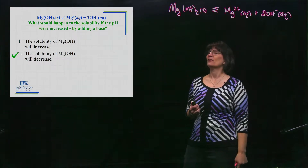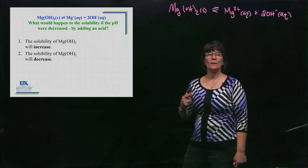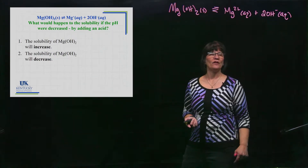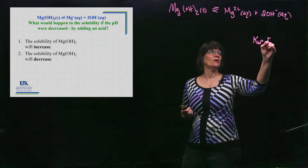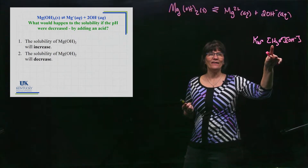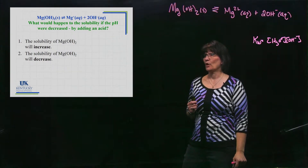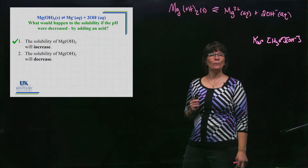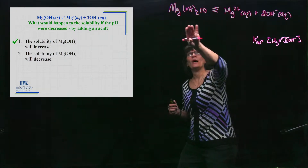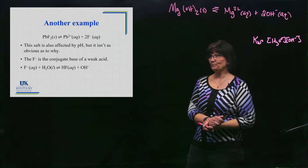What if we decrease the pH? You add an acid. We remember there's always a water equilibrium in aqueous solution. If we're adding acid, we're taking base out, and that will try to make more product - so it will increase the solubility.